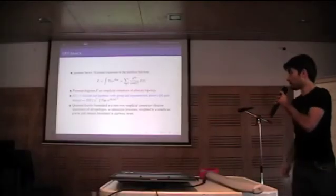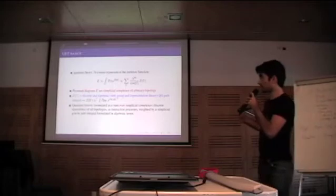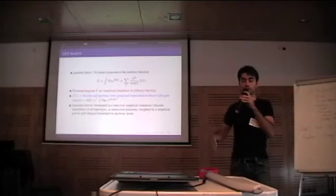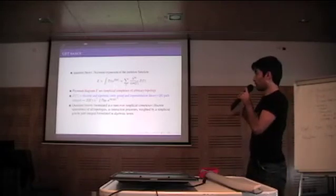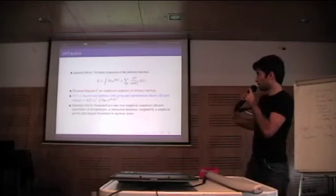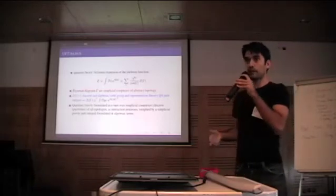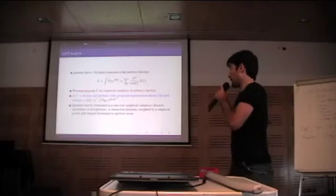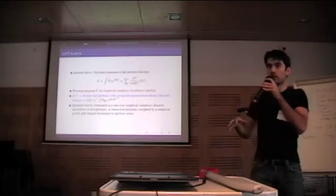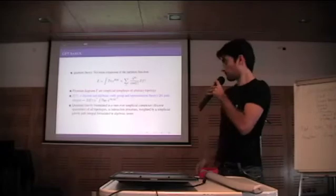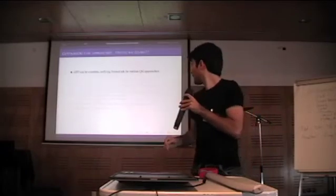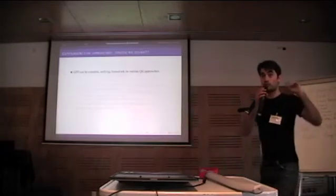This means that we try to formulate quantum gravity as a sum over simplicial complexes—that's the sum over Feynman diagrams—for all topologies produced as interaction processes, and they are weighted by a simplicial gravity path integral. Okay, so these are the key features of the approach.